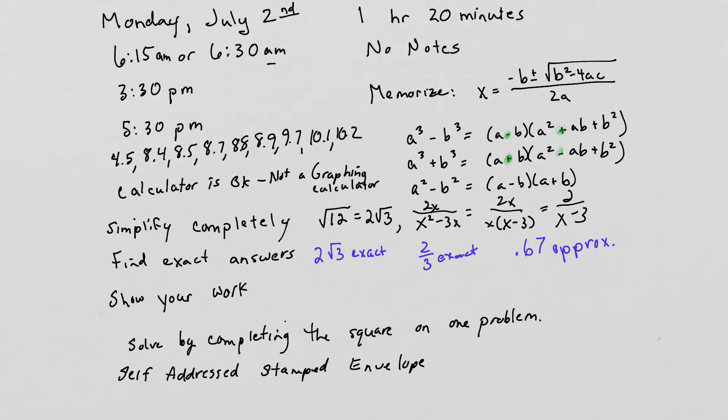You have a test coming up Monday, July 2nd. It's one hour and 20 minutes long. You can take it at 6:15 or 6:30 in the morning—I had both times in the email, either one's okay—or you can take it at 3:30 in the afternoon or 5:30 in the afternoon.